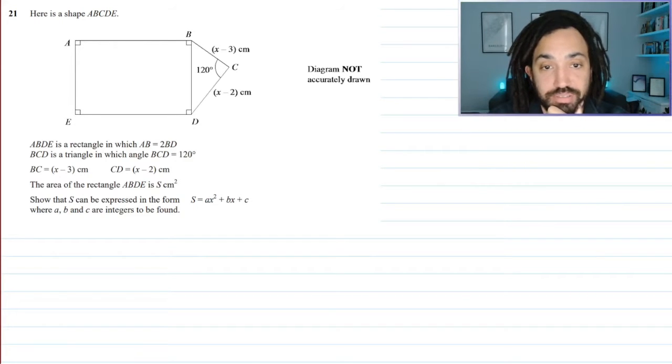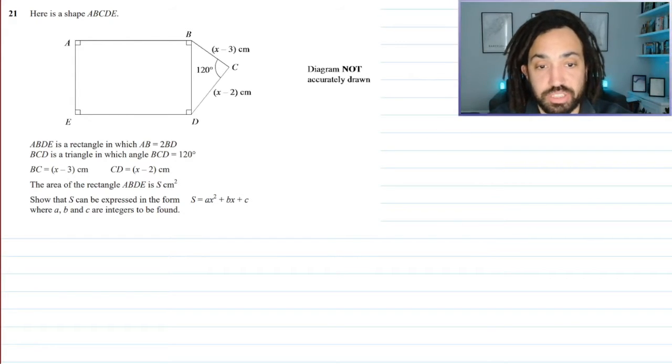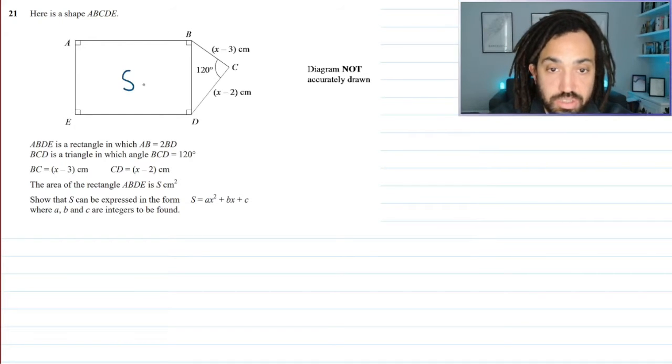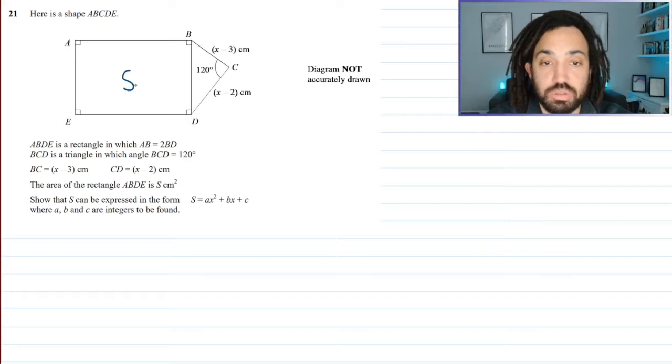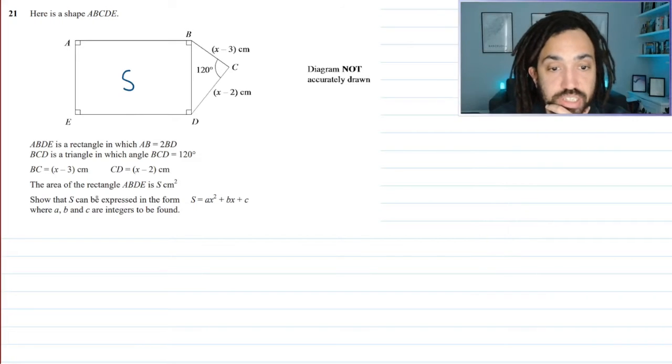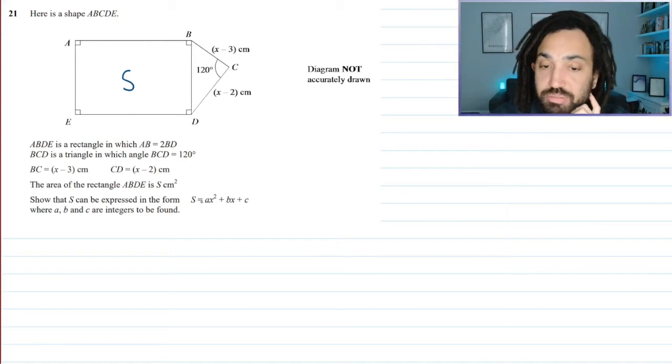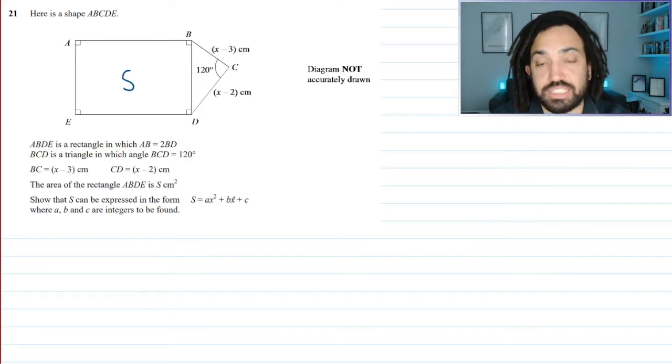So what do we have here? We have a rectangle in which AB is twice the length of BD. And we've got this is a triangle over here. And we have the side lengths X minus 3, X minus 2. Now the area of this one is S centimeters squared. If that area is S, find that S can be expressed as a quadratic in terms of X.